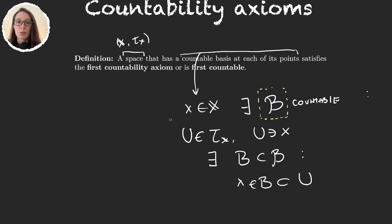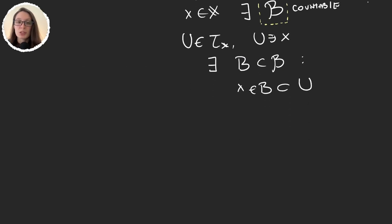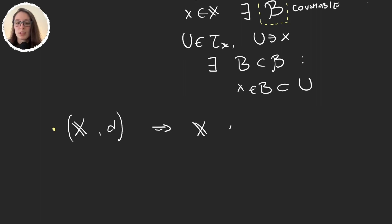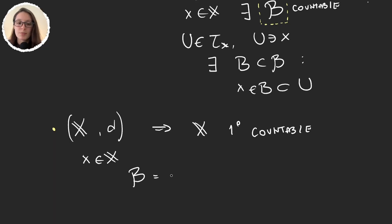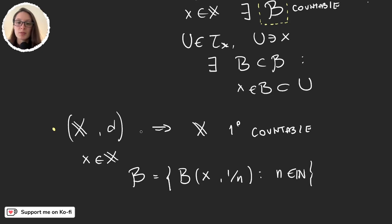If we take another point x, there will be another basis B for that point. The first example of spaces that satisfy this condition are metric spaces. If X has a topology induced by a metric — a metrizable space — then X is first countable. This is easy to check: for any x in the space we define the collection B as the set of all balls centered at x with radius 1/n for n a natural number. So every metric space is first countable.